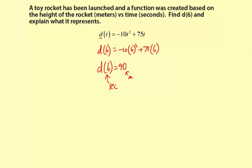So d of 6 equals 90, but then the explanation, here I'll just write the whole thing. d of 6 equals 90, and that means at 6 seconds, the rocket was 90 meters high.